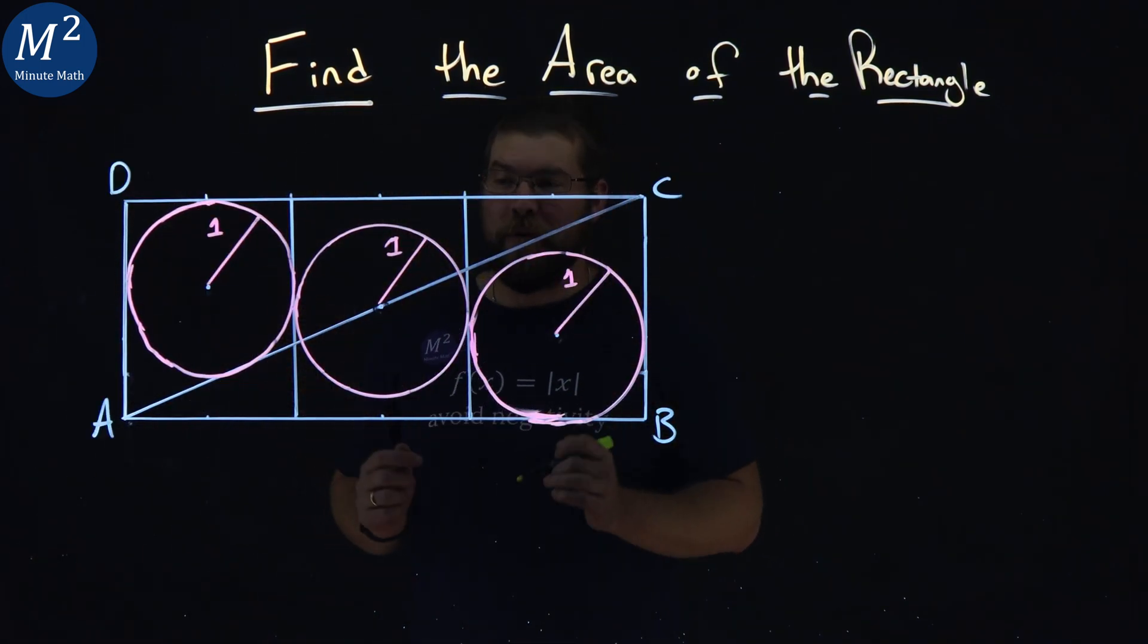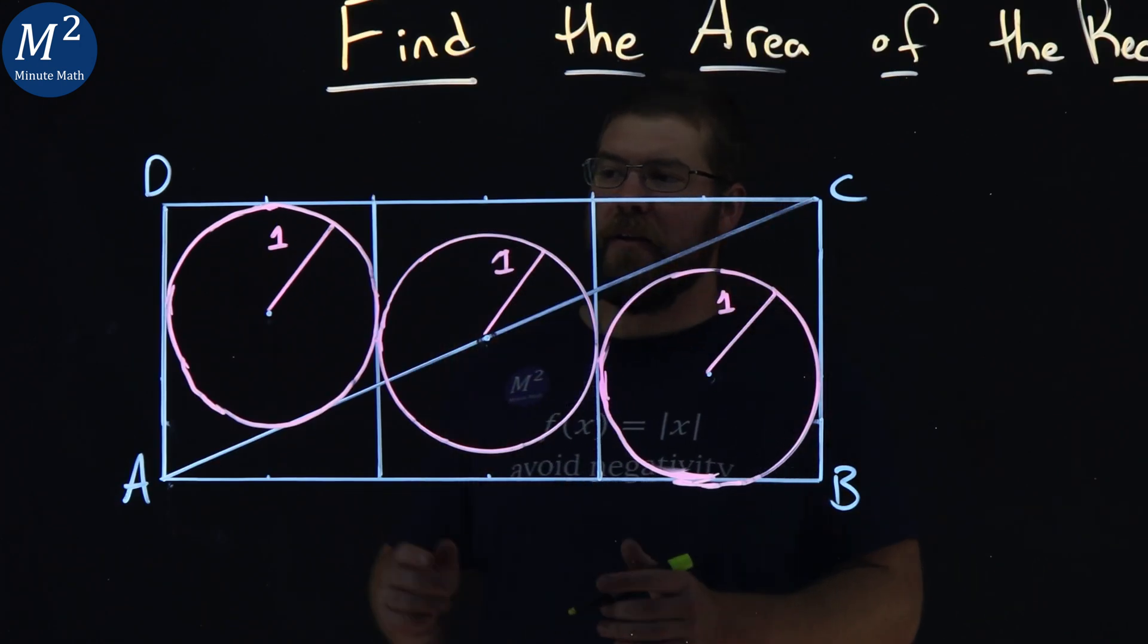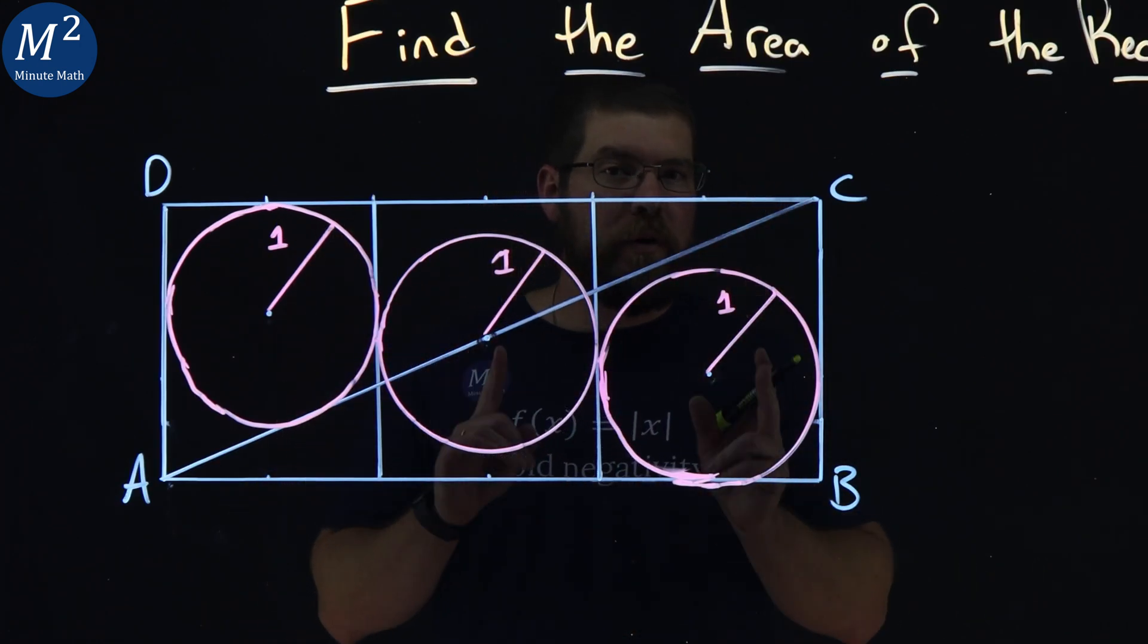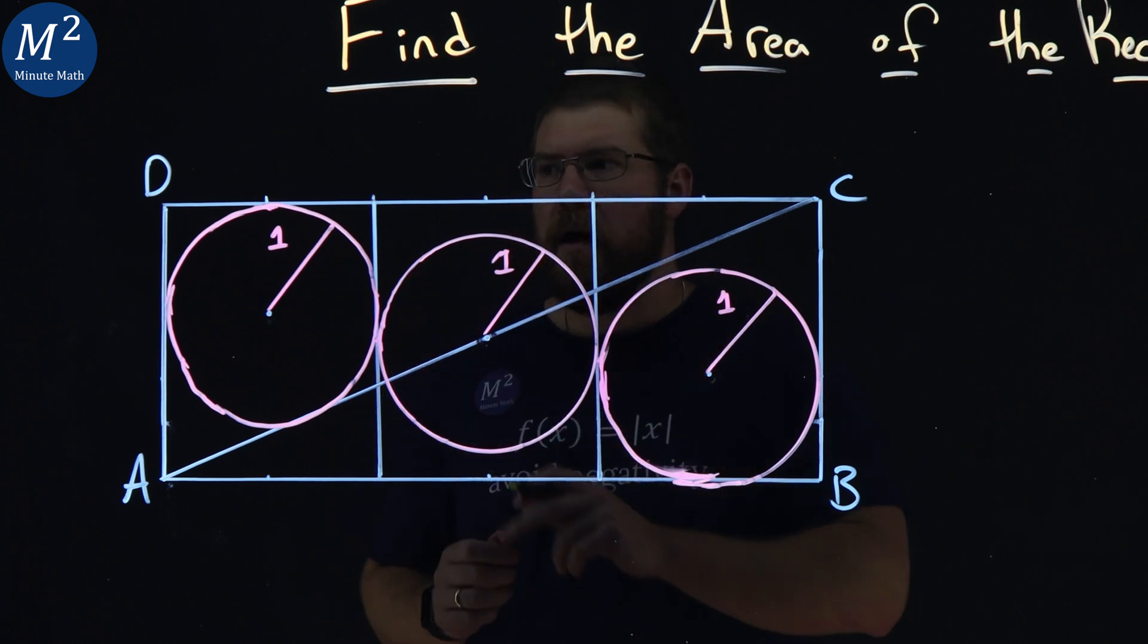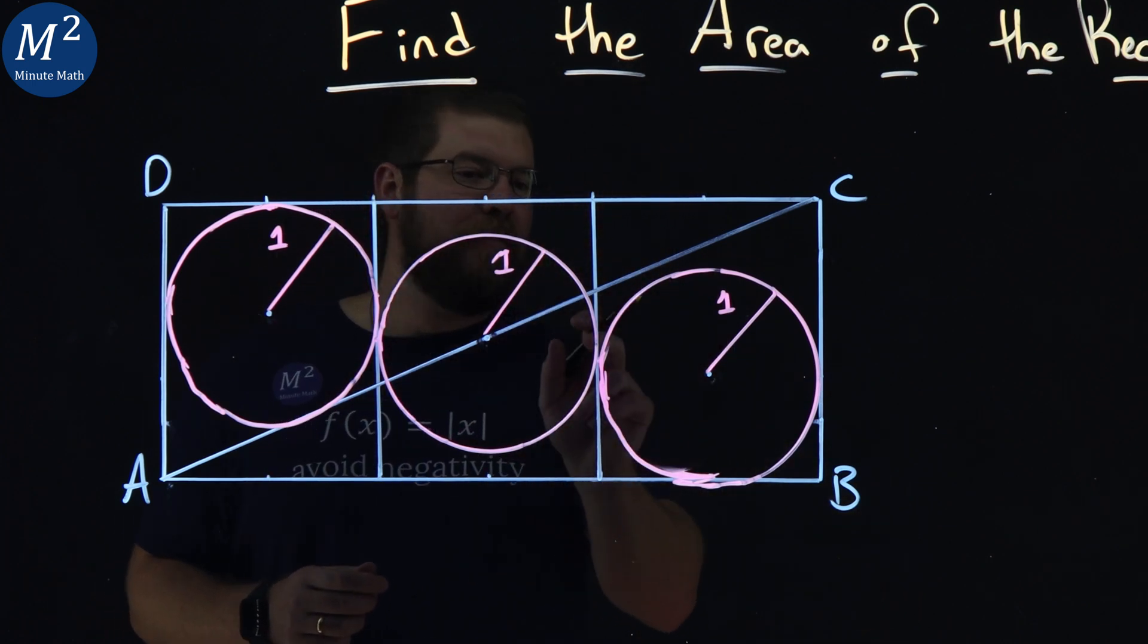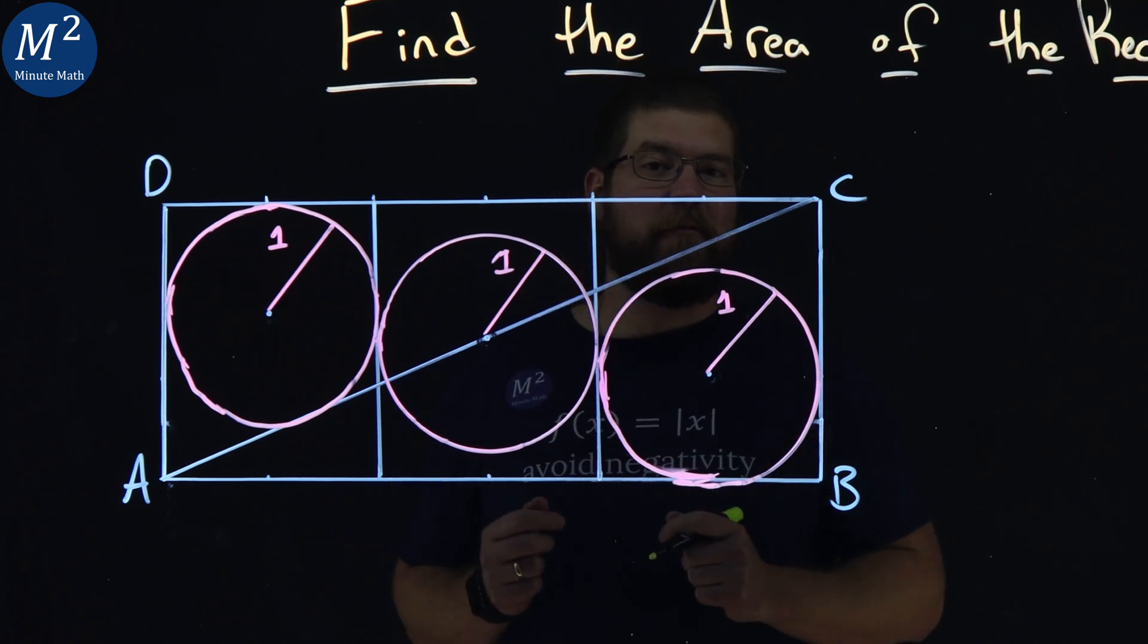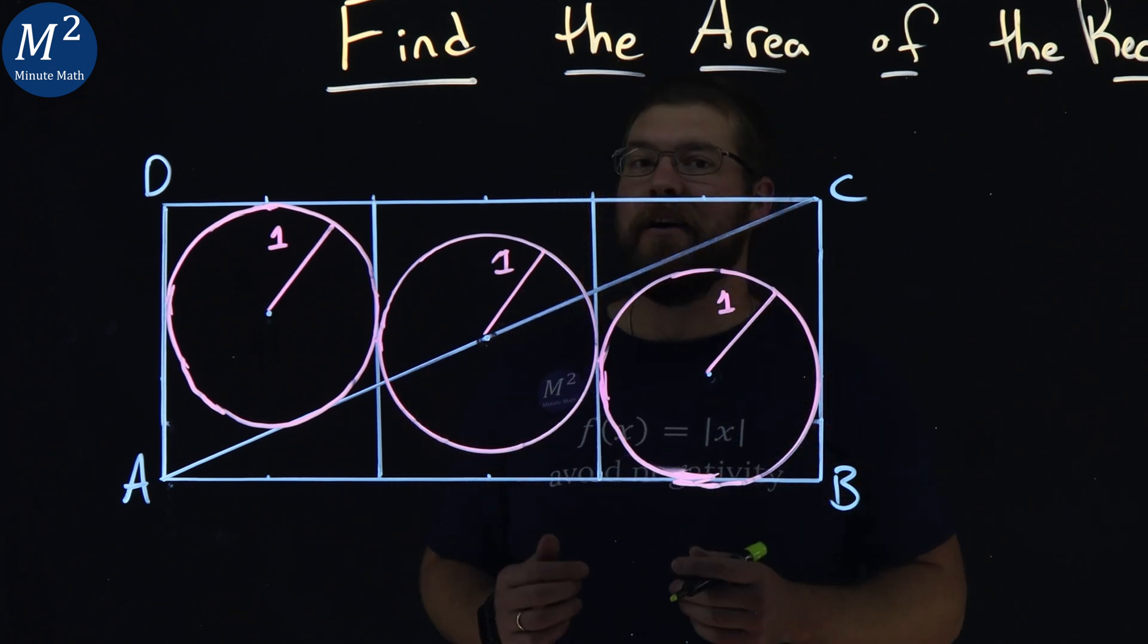What is the area of this rectangle? A rectangle has three equal parts with three equal circles inside, each with a radius of one. All the points you see here are points of tangency, and with just that information, can we find the area of the rectangle?